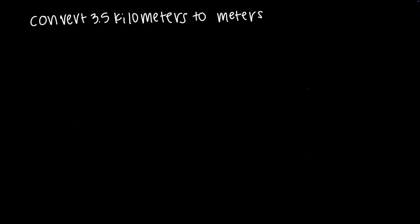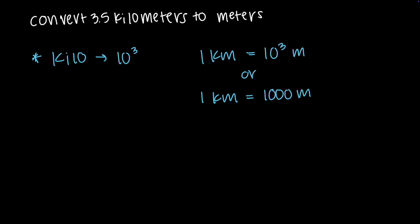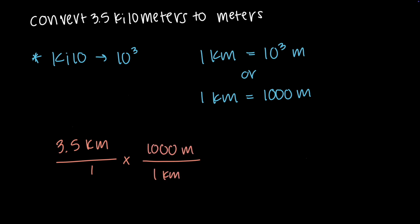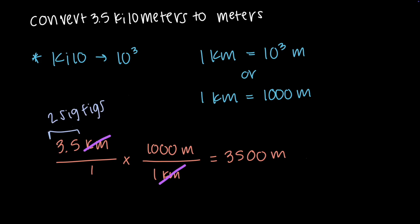Let's apply this method by converting 3.5 kilometers to meters. We know that kilo means 10³ and the base unit is meters. Since kilometer is the larger unit, we write 1 kilometer equals 10³ meters, or 1 kilometer equals 1000 meters. Setting up the conversion, I write 3.5 kilometers over 1, place 1 kilometer on the bottom of the next fraction and 1000 meters on top, cancel out the kilometers, and multiply 3.5 times 1000 to get 3500 meters. 3.5 kilometers had two significant figures, and 3500 meters without a decimal place also has two significant figures, so this is our answer.